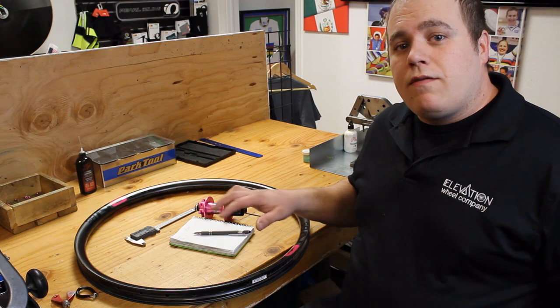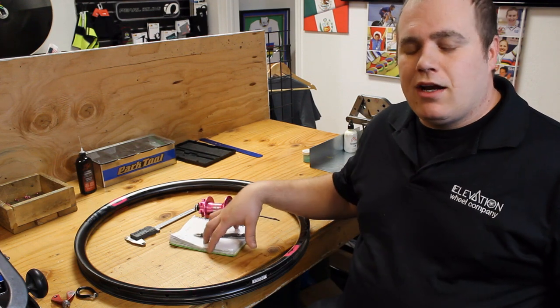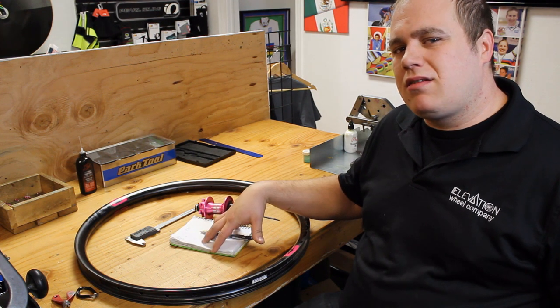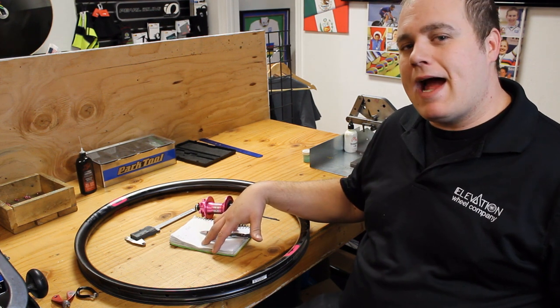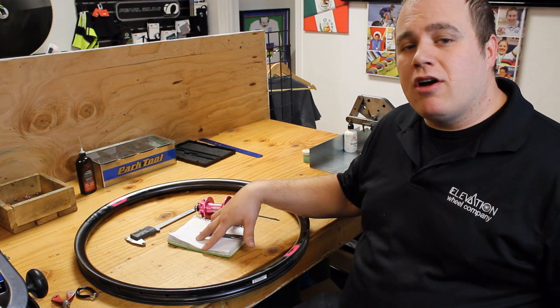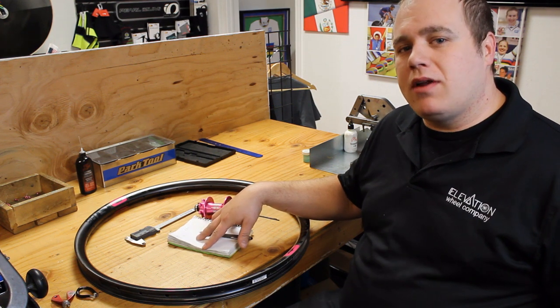To measure spoke length, first thing we have to do is figure out the rim's ERD. You'll find published measurements for this, but more often than not, they're not very accurate, especially on China Carbon rims. So always a good idea to measure your own, that way you get the most accurate spoke length possible.